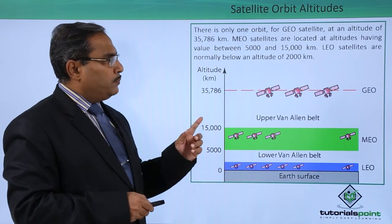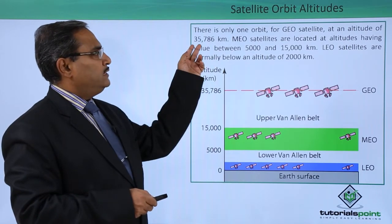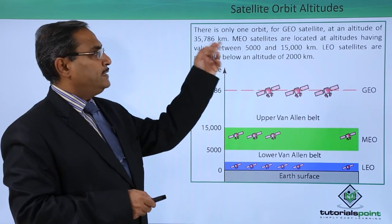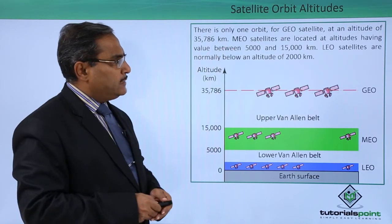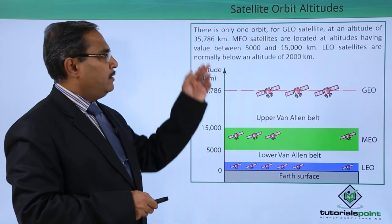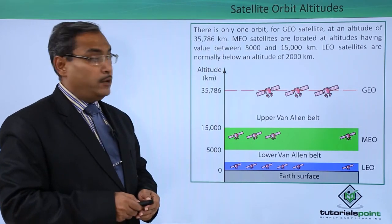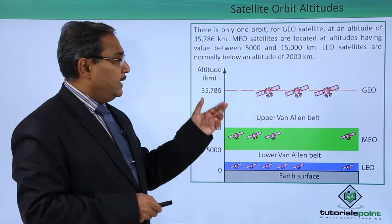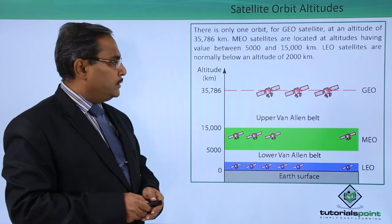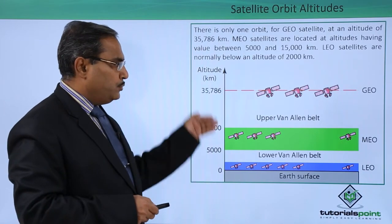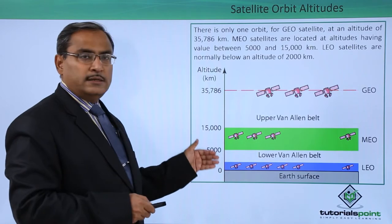There is only one orbit for GEO satellite at an altitude of 35,786 kilometers. MEO satellites are located at altitudes having a value between 5,000 to 15,000 kilometers. And the LEO satellites are normally below an altitude of 2,000 kilometers. Here I have shown you where the GEO, MEO, and LEO satellites are situated.